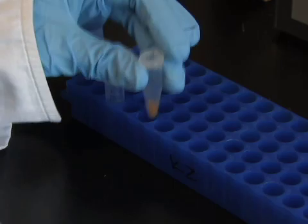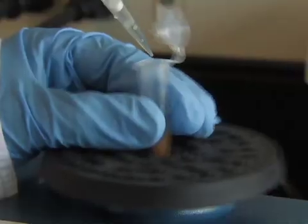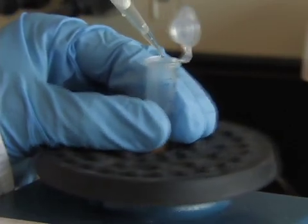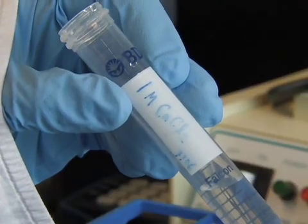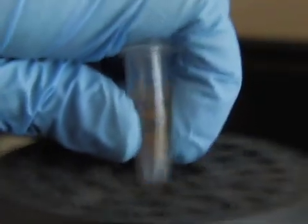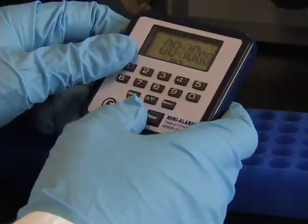Once the DNA has been added to the beads, vortex while adding 100 microliters of calcium chloride drop wise. Calcium chloride causes the DNA to precipitate. After a brief vortex, allow solution to precipitate for 10 minutes.